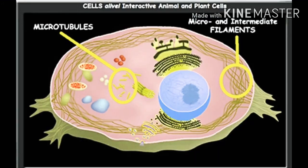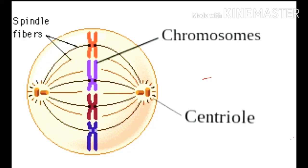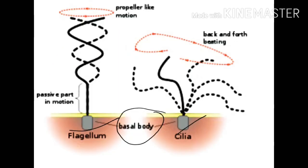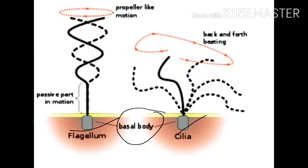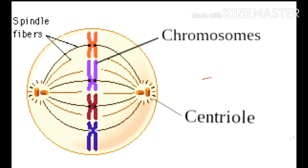These microtubules are present in the cytoplasm, and along with the cytoplasm, they are also present in centrioles, in the basal body of cilia and flagella, sperm tail, and spindle apparatus. Cilia and flagella are structures which help in movement, and they remain attached to the cell with the help of a basal body, so that basal body also contains microtubules. Microtubules are also present in sperm tail, centrioles, and spindle apparatus.